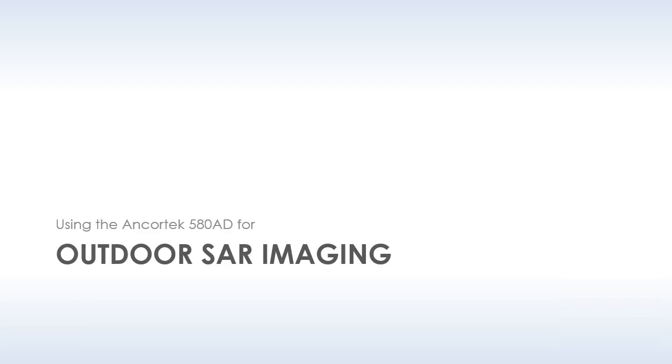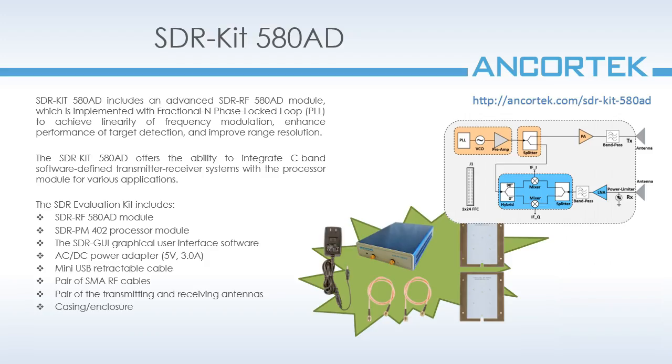Alright, we've received some good results indoors. Now let's head outdoors with the Ancortek 580AD. The 580AD evaluation kit operates at 5.8 gigahertz with up to 400 megahertz of bandwidth. Unlike the 2482, there is only one receive channel. The radar can operate in FMCW, FSK, or CW mode.